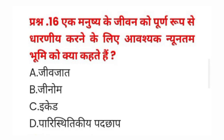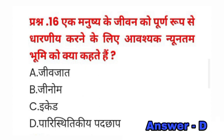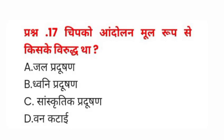Question number sixteen: एक मनुष्य के जीवन को पूर्ण रूप से धारणीय करने के लिए आवश्यक न्यूनतम भूमि को क्या कहते हैं? A) जीवजात, B) जीनोम, C) एकेड, D) पारिस्थितिकीय पदचाप। इसका सही जवाब D) पारिस्थितिकीय पदचाप होगा।